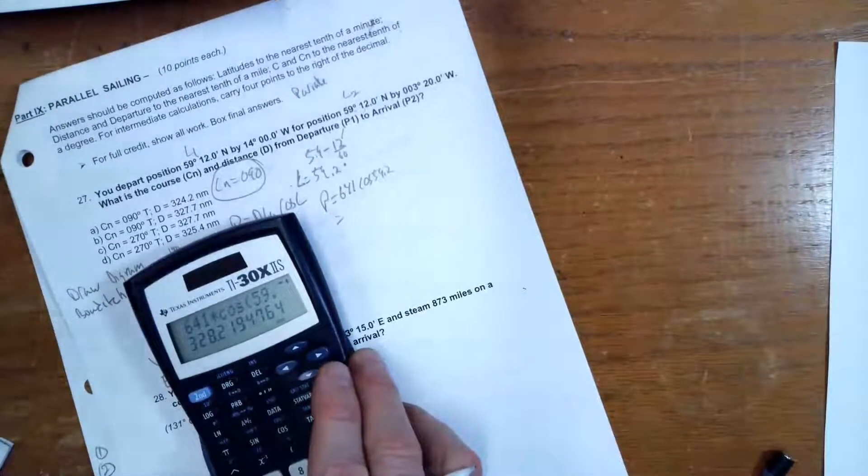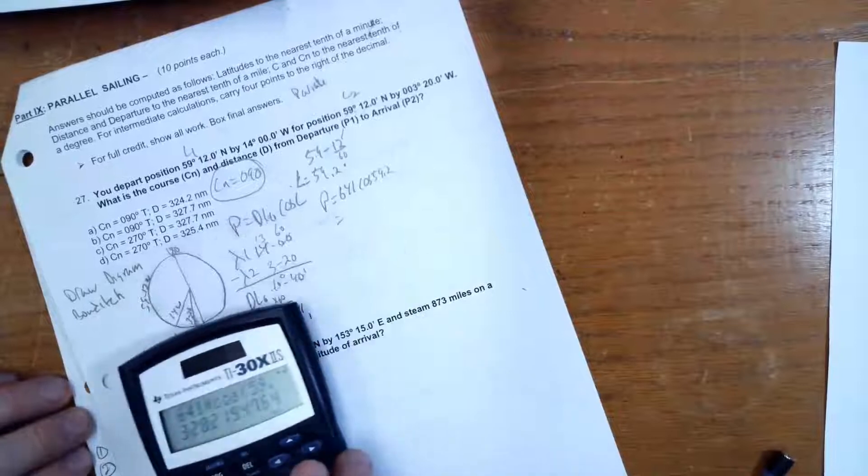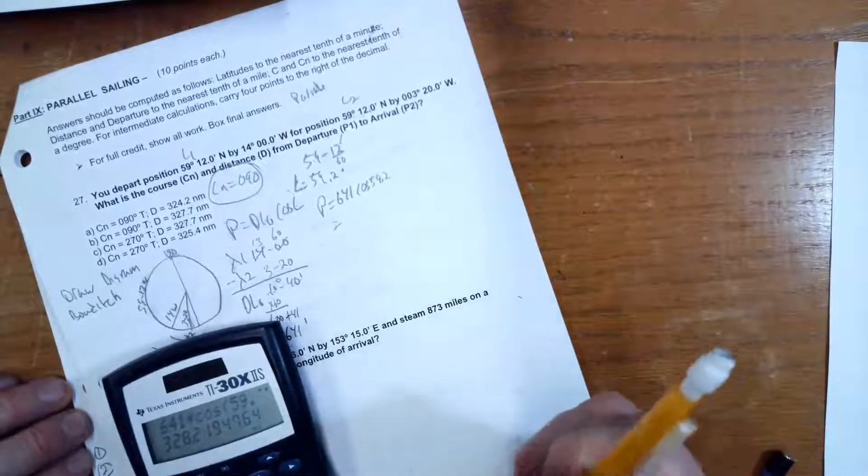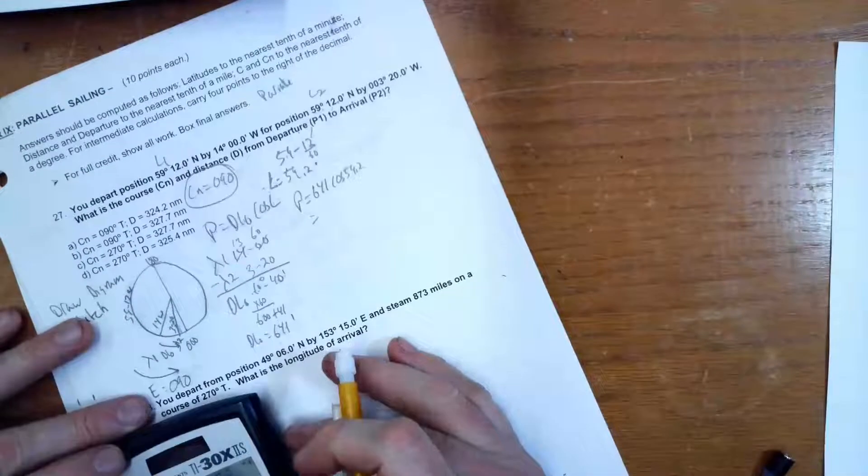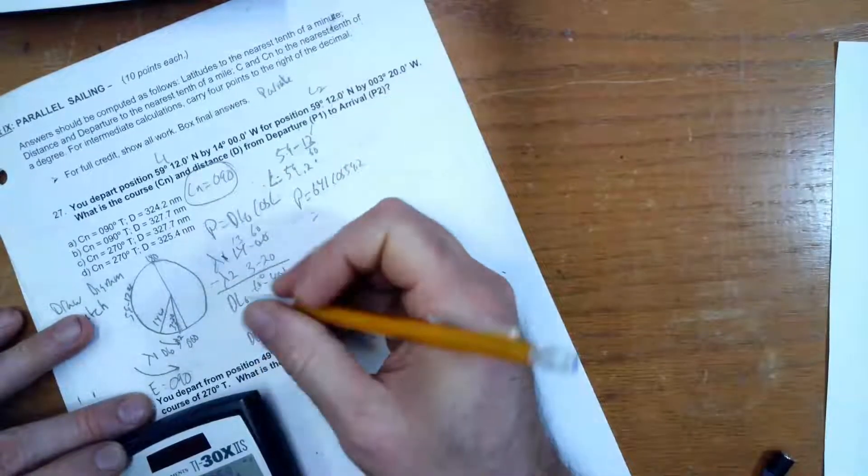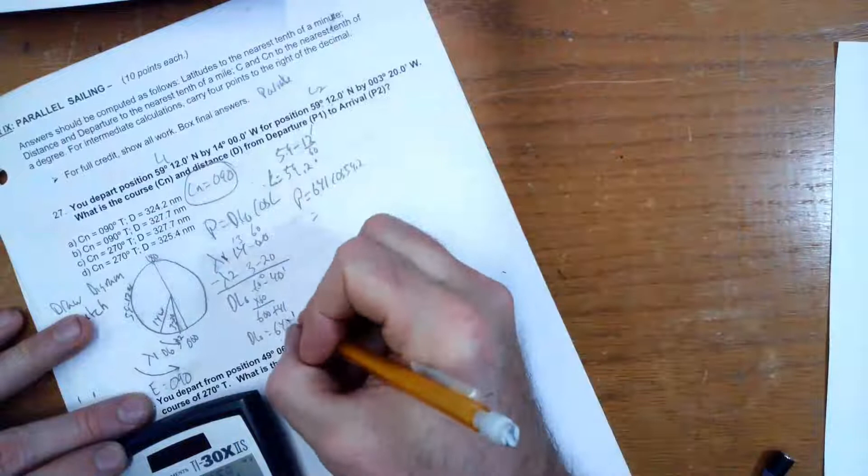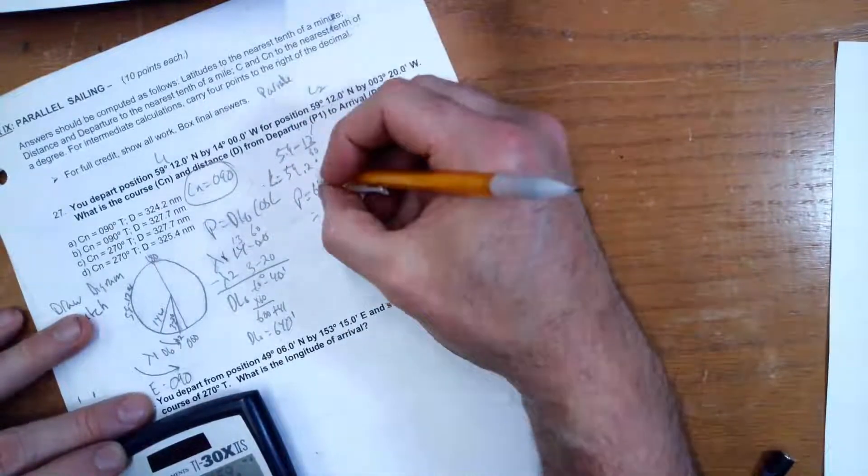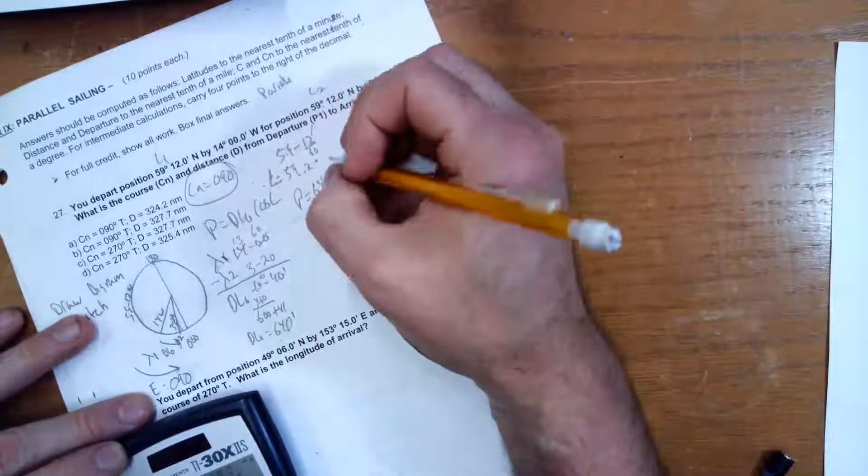Oh, I'm looking at my answer key. I think I'm slightly off. Oh, oh, it's not 641, it's 640. Okay, it's 640, so that number should be 640, not 641.